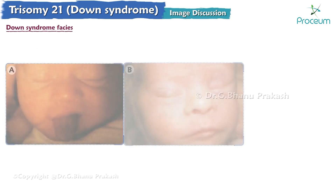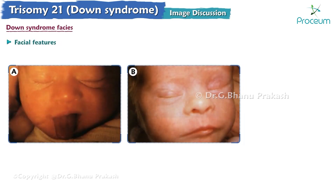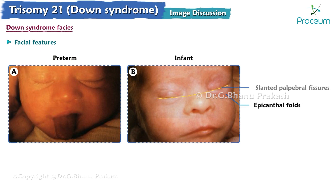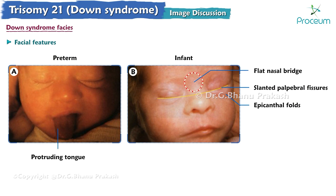Here is an image showing characteristic facial features of Down syndrome depicted in a term infant (Image A) and a preterm infant (Image B), including epicanthal folds, slanted palpebral fissures, flat nasal bridge, and protruding tongue.